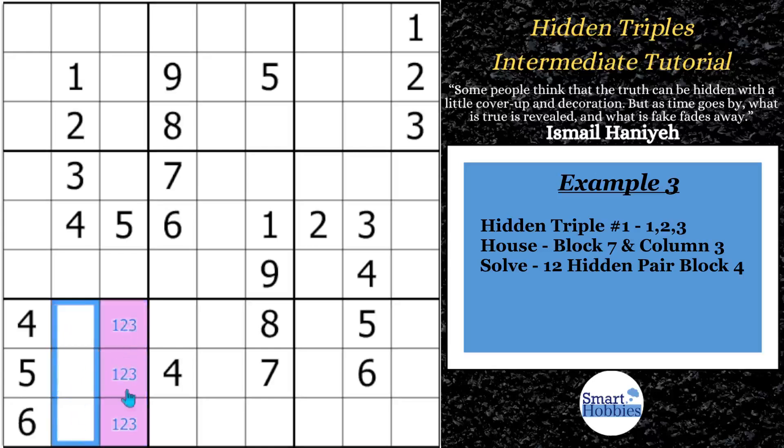Because you eliminated a 1, 2, and 3 from these cells. And since we found the hidden triple first, you can put in the naked triple now and go, this has to be a 7, 8, or a 9. And this is very common. So when you find a hidden pair, then you'll also be able to find naked pairs that go in the same block or the same row. Same thing here with the hidden triple.